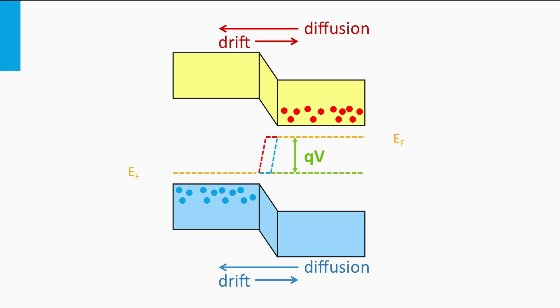Due to the reduced field — or in other words the reduced slope — the drift of electrons and holes is reduced. In addition, the reduced width of the depletion zone enhances the diffusion.